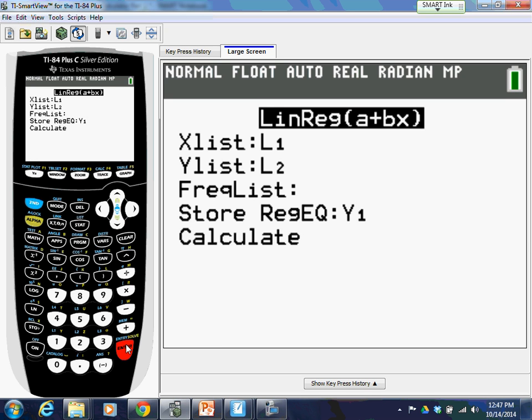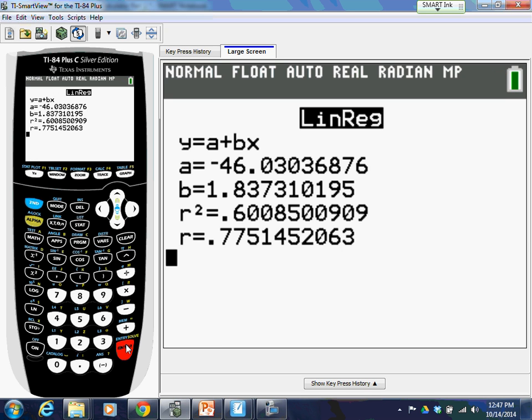And then we'll go ahead and down and hit calculate again and get our equation. So that was the equation we said in the last video. Again, the a value is the y-intercept. The b value is the slope.